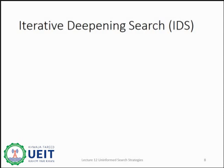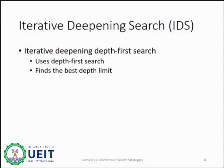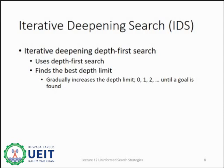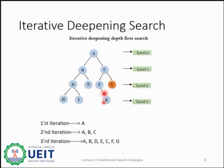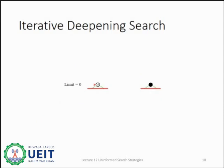The iterative deepening algorithm is also an extension of depth first search. These search algorithms find out the best depth limit by gradually increasing the limit until a goal is found. This algorithm performs depth first search and keeps increasing the depth limit after each iteration until the goal node is found. This search algorithm combines the benefit of breadth first search's fast search and depth first search's memory efficiency. It is a useful uninformed search when the search space is large and the depth of the goal is unknown. In the third iteration, the algorithm finds the goal node — in the first iteration output would be A, in the second iteration ABC, and in the third the goal will be found as ABCDEFG.